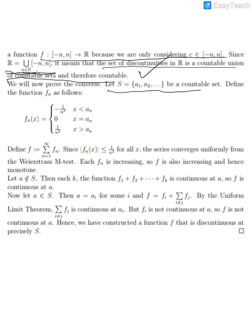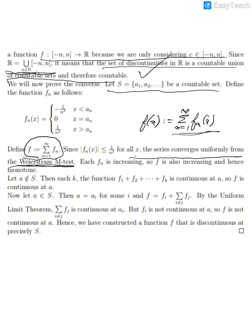We now prove the converse and let S be this countable set. We define the function f_n as follows: f_n(x) is -1/n² if x < a_n, 0 if x = a_n, and 1/n² if x > a_n. Now we define f to be Σf_n. This means we define f(x) at each point to be this series. And this converges uniformly from the well-known Weierstrass M-test. This will be a good exercise in series of real and complex valued functions. So this thing is well defined.